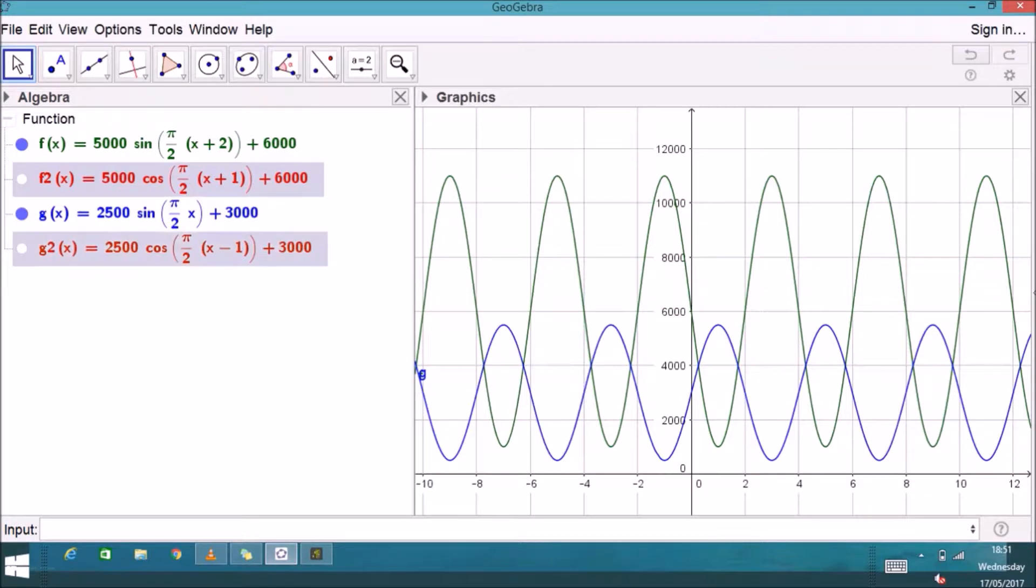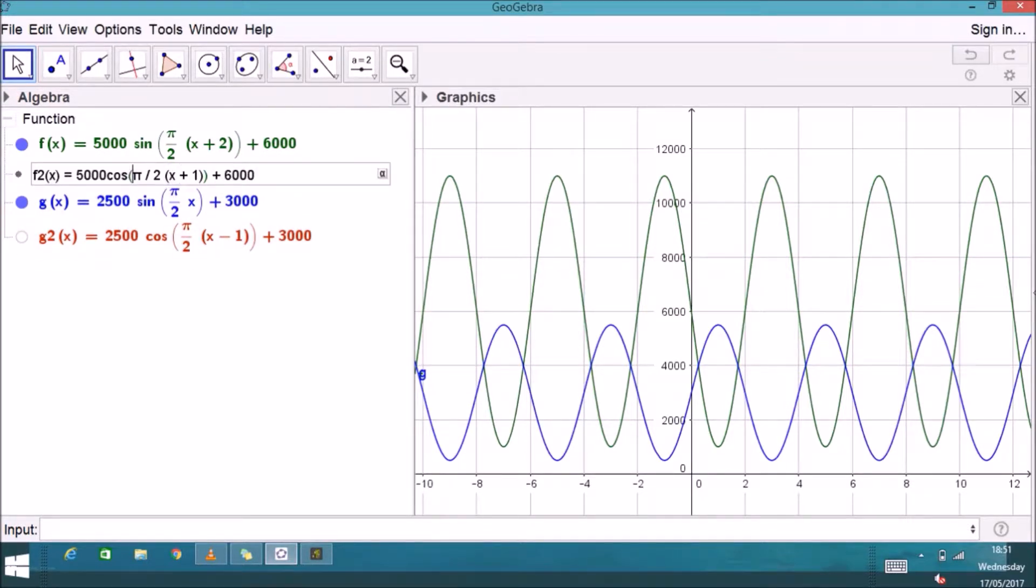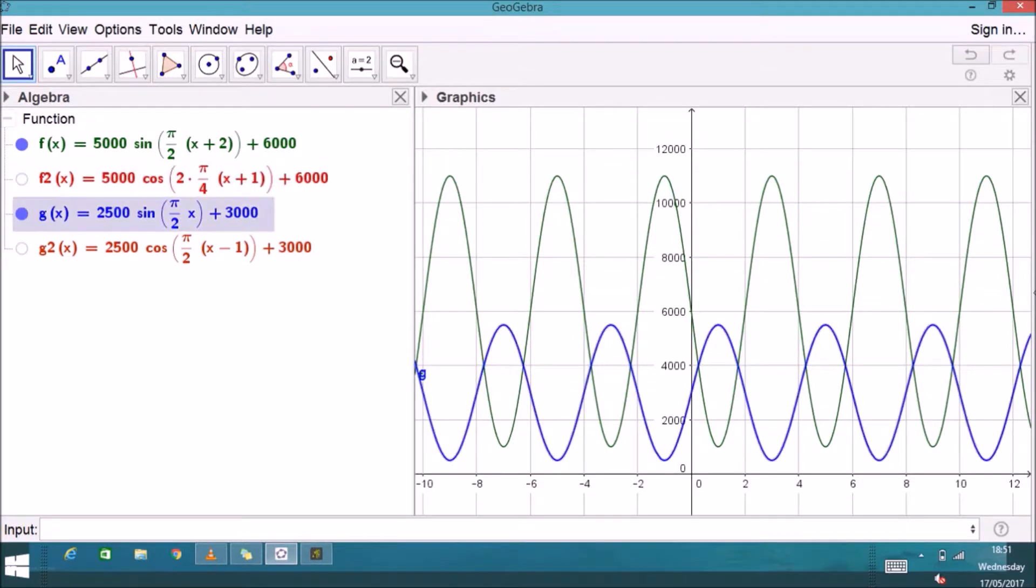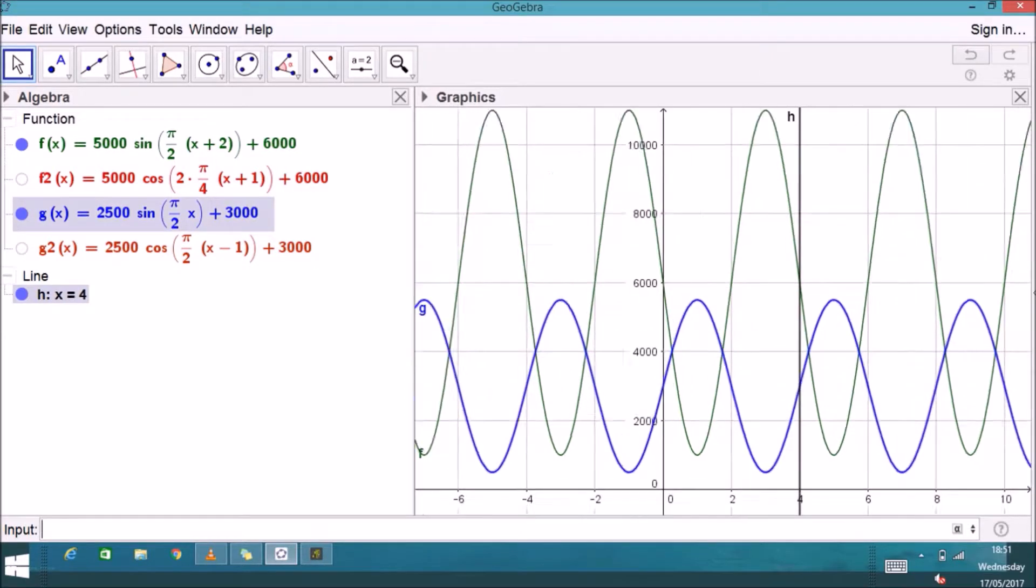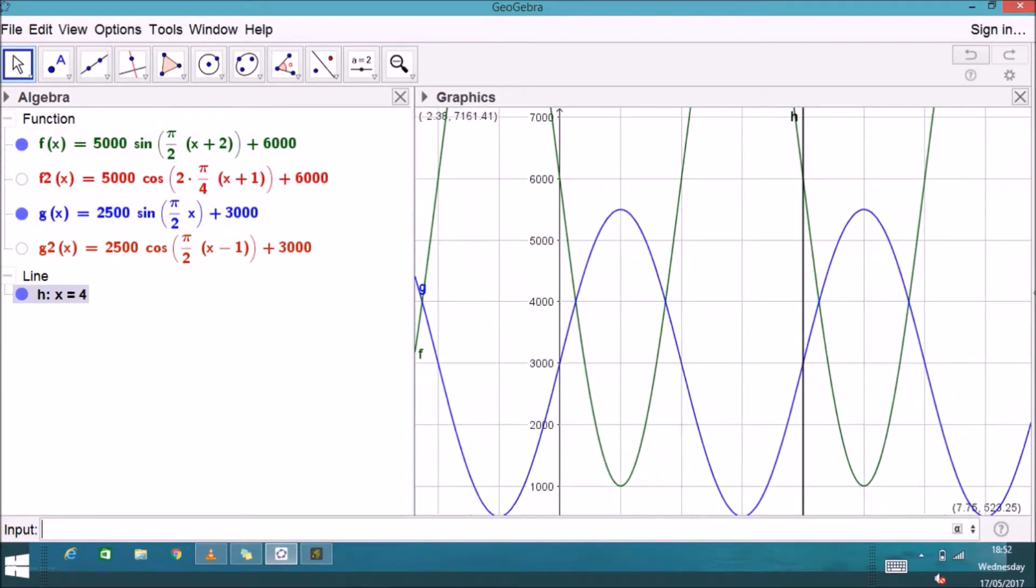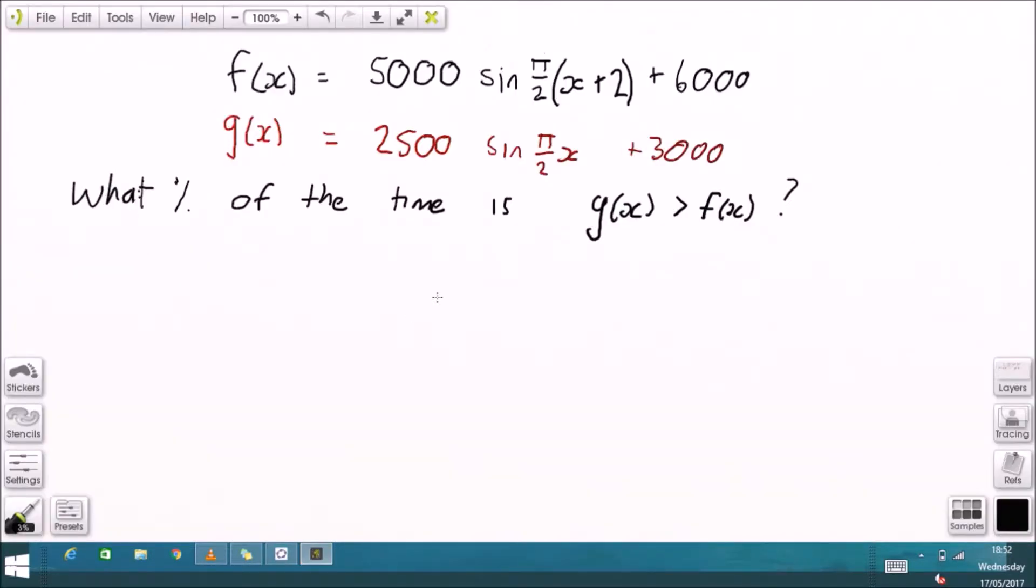So the entire period of this is 4. We can see this because this coefficient of x here, the period we multiply by 2π to make the period equal 1, then we divide by the period we wish to have. So 2π divided by 4 gives us a period of 4. You can see how it takes before the function repeats. Both of these functions have the same period. So if I figure out how much of the time this function g of x is bigger than f of x, that will answer the question.